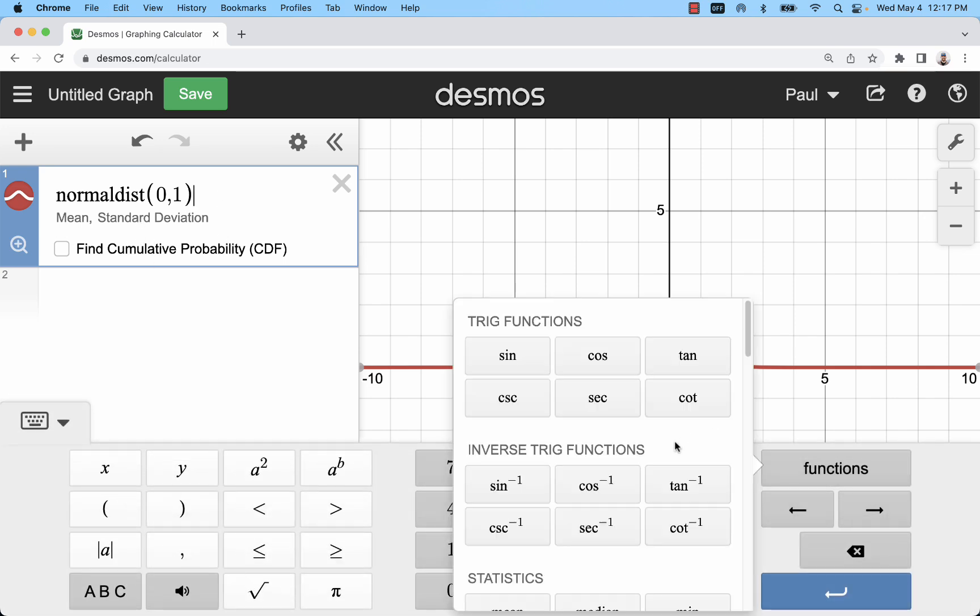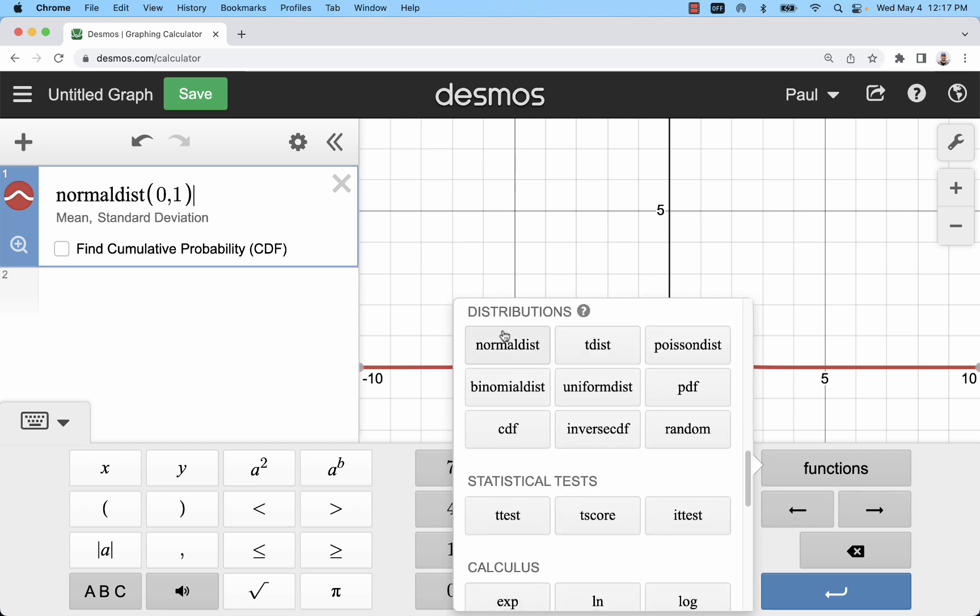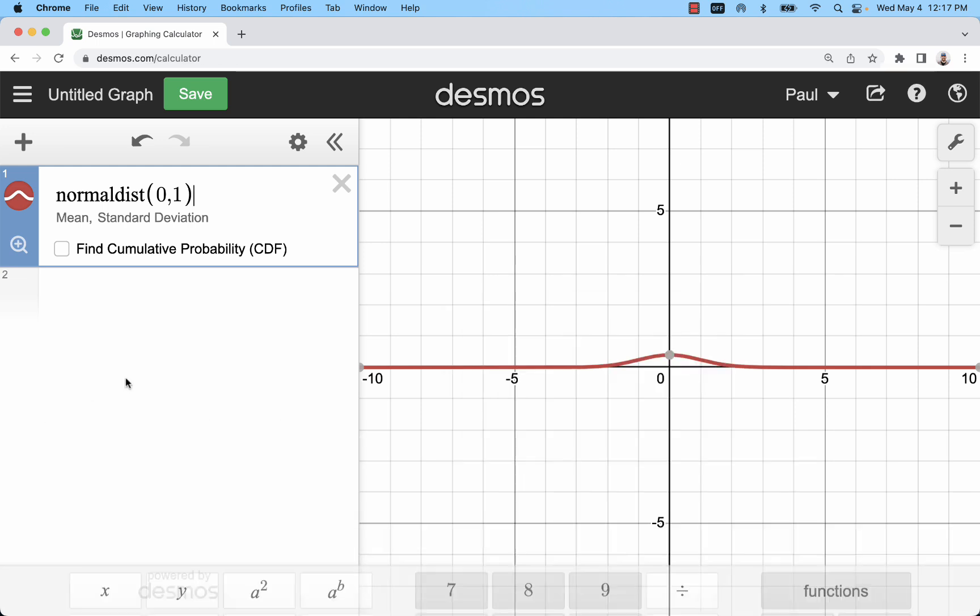You can also find this function if you open the keyboard, click functions, go to distributions. We're going to use normaldist here. We're also going to use the CDF and inverse CDF functions as part of this demonstration.